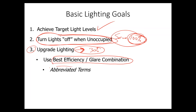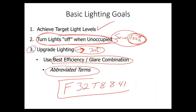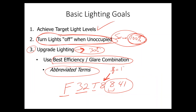Let me go through some abbreviated terms common in the lighting industry. Here's something you might see on the side of a lamp: the F means fluorescent, the 32 is the watts, T means tube, and 8 means eighths of an inch — so this would be eight-eighths of an inch, or one inch in diameter. The last three digits are actually two different things: the 8 refers to the CRI (color rendering index), and the 41 indicates the color temperature is 4100 Kelvin. If you see that on the lamp in the ceiling, you'll know how to do the retrofit to accomplish what you're trying to achieve.